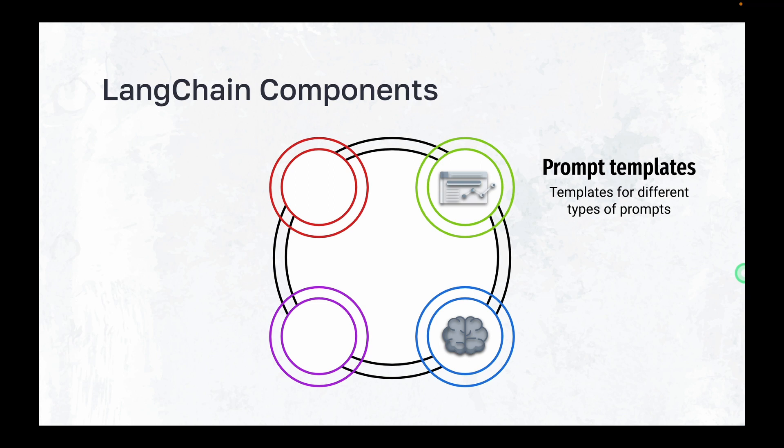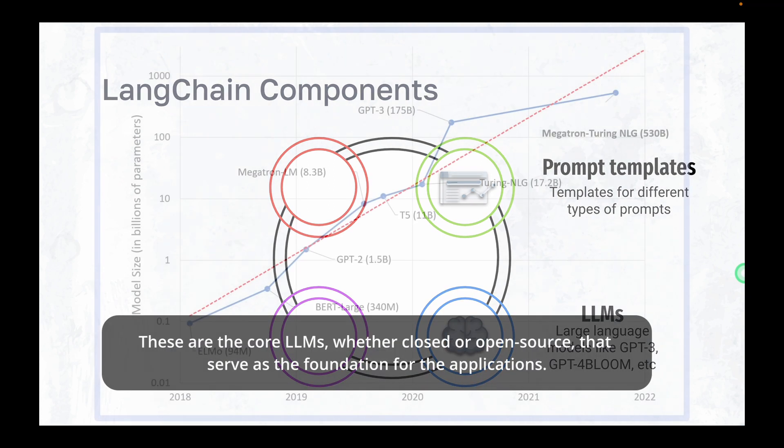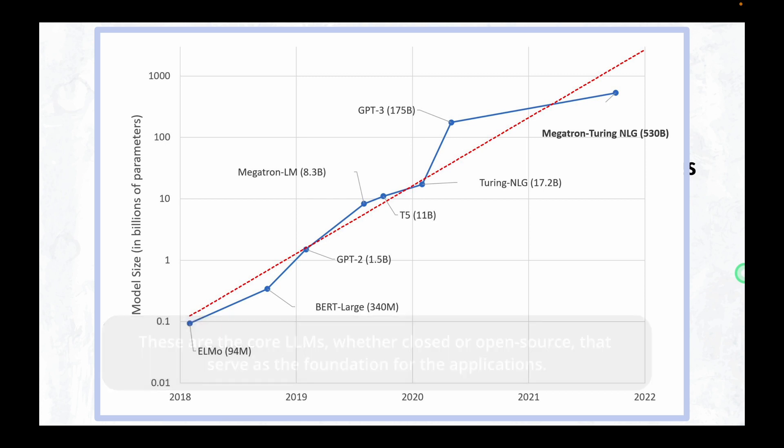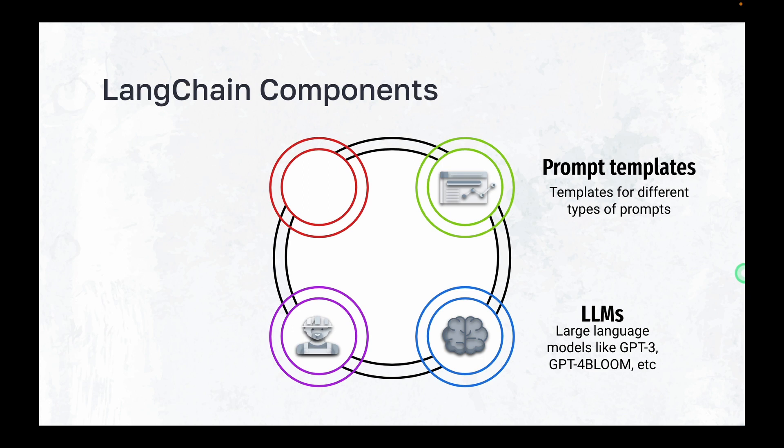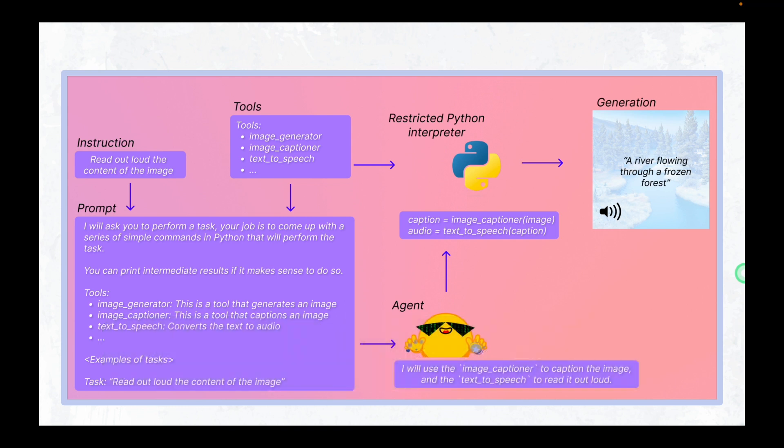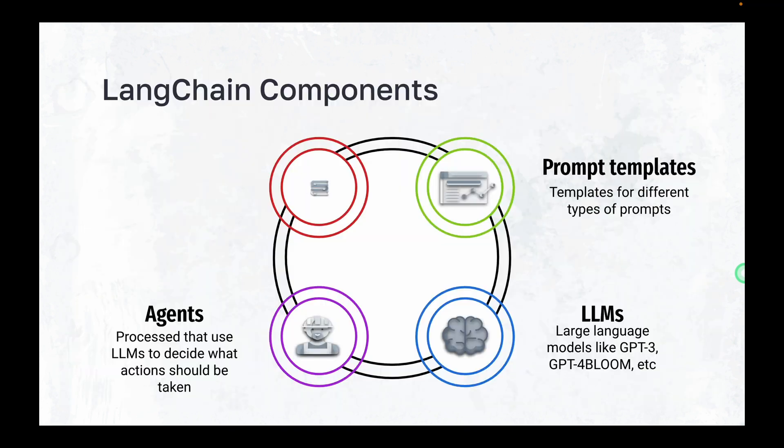The second component is LLMs. These are the core LLMs, whether closed or open source. These LLMs serve as a foundation for the applications. The third component is agents. Agents use these LLMs to decide what actions should be taken and what actions should not be taken.